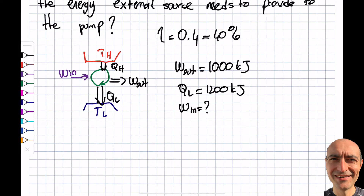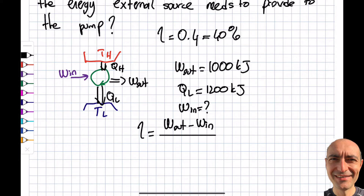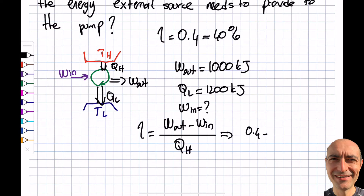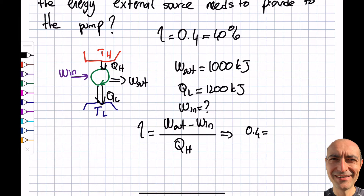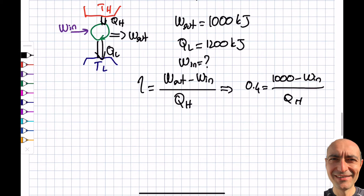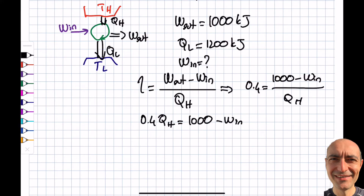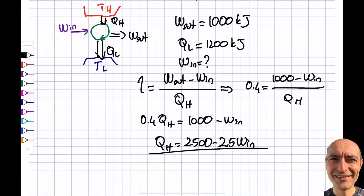Starting with the thermal efficiency equation: η = (W_net_out) / Q_H, where W_net = W_out − W_in. So 0.4 = (1,000 − W_in) / Q_H. Multiplying both sides and rearranging: 0.4 × Q_H = 1,000 − W_in. Multiplying through by 2.5 gives Q_H = 2,500 − 2.5 × W_in. I now have two unknowns — Q_H and W_in — so this equation alone is not sufficient.